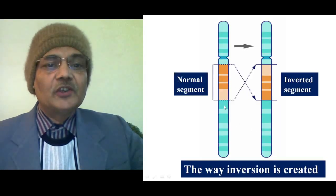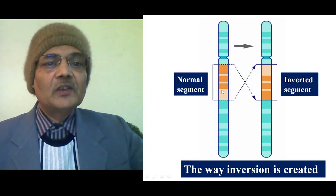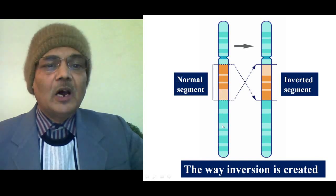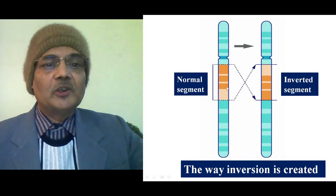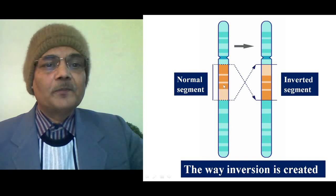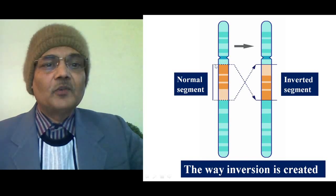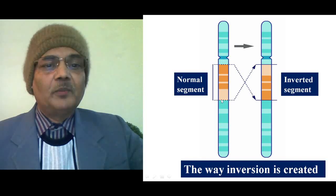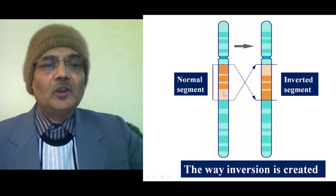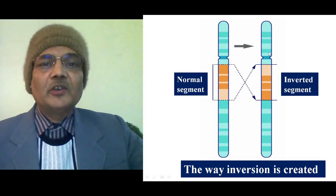In this picture, you can see that two chromosomes are shown. The left one is a normal chromosome because the gene arrangement is in normal order. Suppose two breaks occur in this chromosome — one break on the upper side, the other on the lower side. After the break, this broken segment gets inverted 180 degrees and then rejoins with the same chromosome, resulting in the formation of this inverted chromosome.